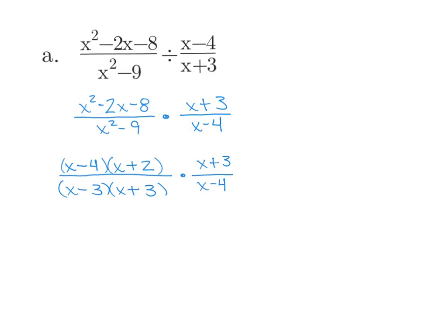We've now factored everything, so the next step is to cancel common factors. I have an x minus 4 in the top and the bottom, and I also have an x plus 3 in the top and the bottom. What's left over? On the top, I am left with x plus 2. On the bottom, I am left with x minus 3. And we're done.